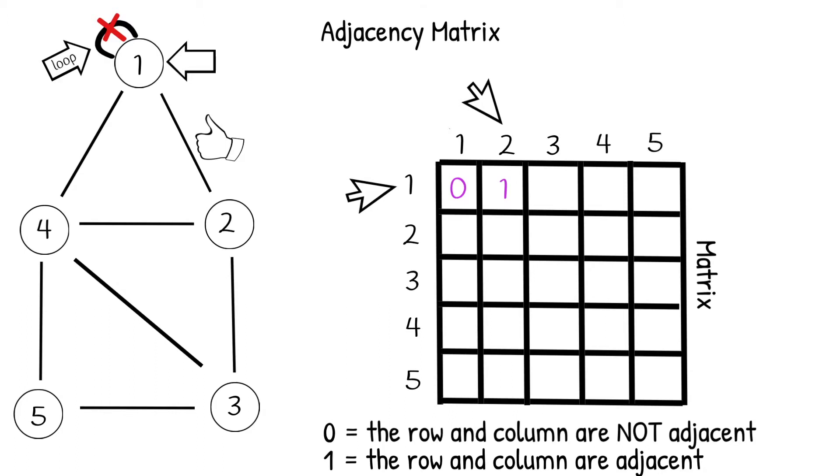It is also important to mention that since this is an undirected graph and the edges are bidirectional, the existence of an edge between the two nodes in reverse is also true. So if an edge exists connecting node 1 and node 2, an edge also exists connecting node 2 and node 1. So that means that we can also put a 1 in the slot at row 2, column 1.